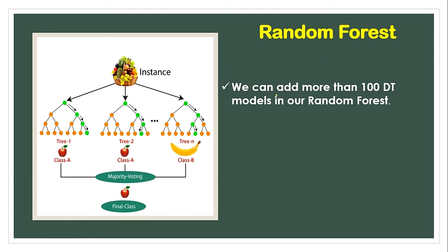Random forest is the most popular industry machine learning algorithm. You will find multiple decision trees to build a random forest. You will find more than 100 trees, 200 trees — multiple decision trees combined together.